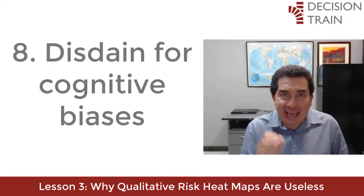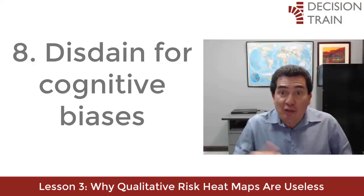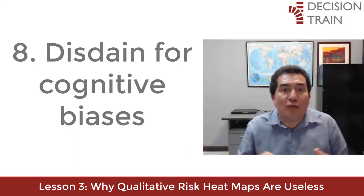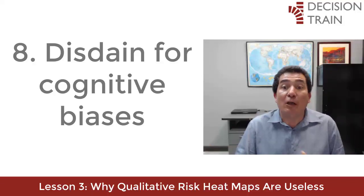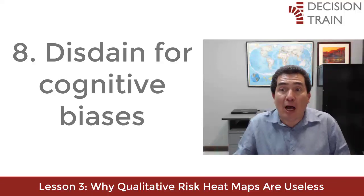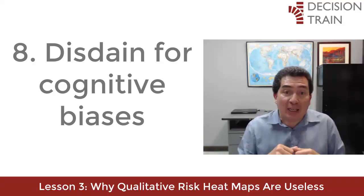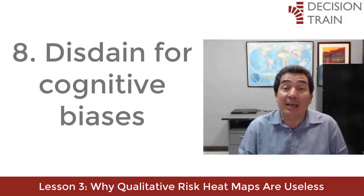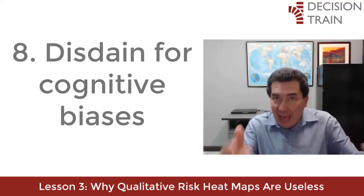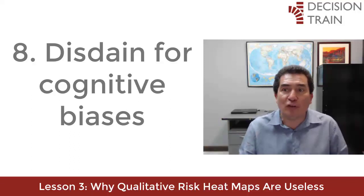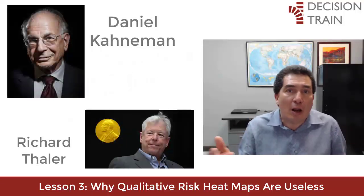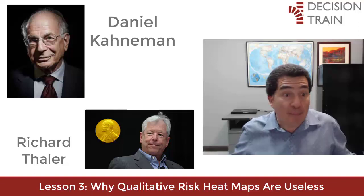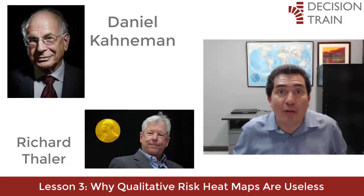Once again, a case of deliberate ignorance. The rationality of the human being has its limitations, and this has been demonstrated ad nauseam by cognitive theory. Qualitative risk management opts for such limits. Quantitative risk management recognizes itself as a decision-making discipline and welcomes contributions from other domains. Behavioral economics is one of those domains — important contributions worth two Nobel Prizes have been made in this field, yet heat maps do not value benefiting from this knowledge.